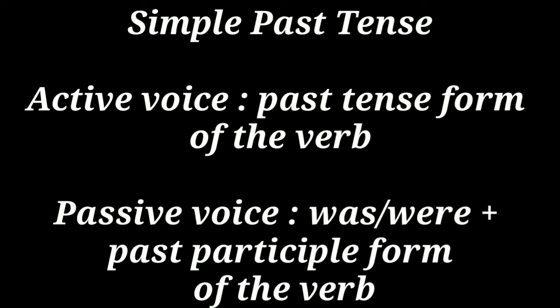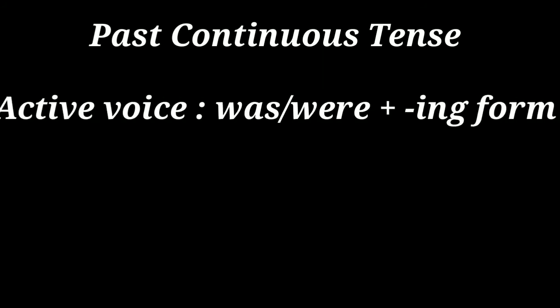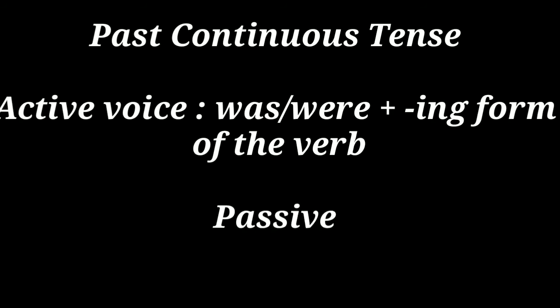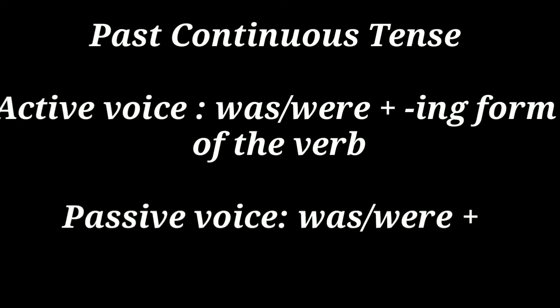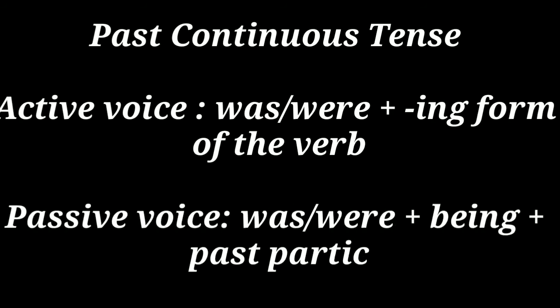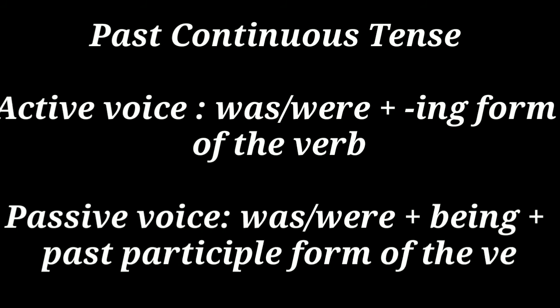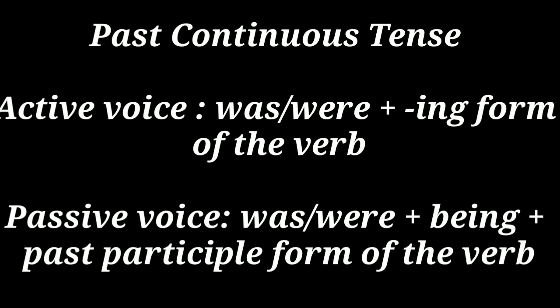In past continuous tense, in active voice we write 'was' or 'were' plus the -ing form of the verb. For example: 'Reetha was writing a story.' In passive voice it will be changed to 'was' or 'were' plus 'being' plus the past participle form of the verb. That is: 'A story was being written by Reetha.'